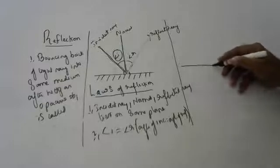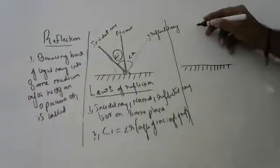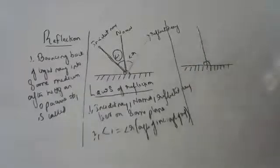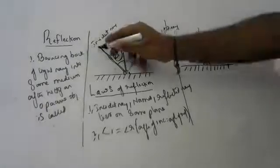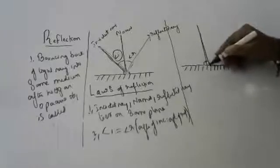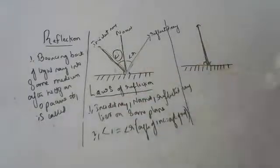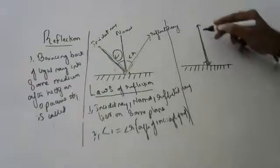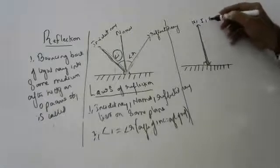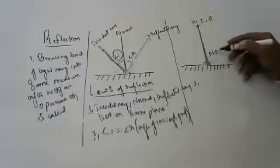Now consider a special case: suppose the light ray comes along the normal — perpendicular to the surface. This is called normal incidence. In this case, the incident ray, the normal, and the reflected ray all coincide. The light ray comes straight and goes back the same way.